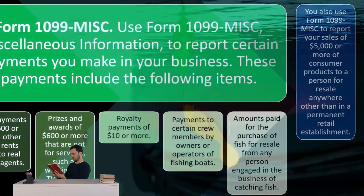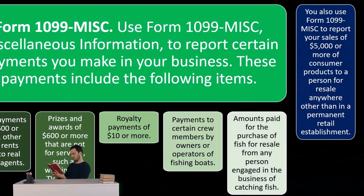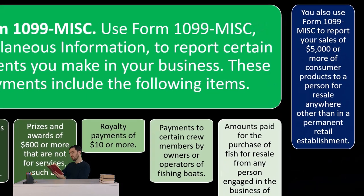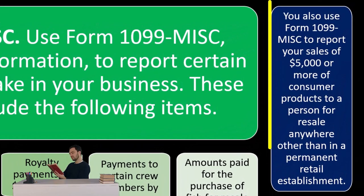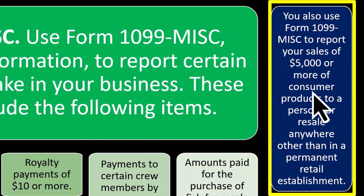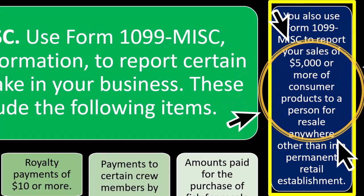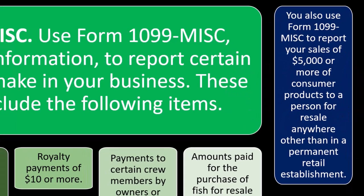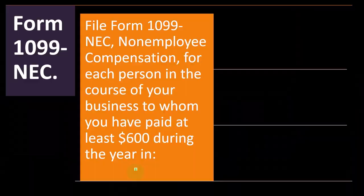You also use form 1099-MISC to report sales of $5,000 or more of consumer products to a person for resale anywhere other than in a permanent retail establishment.